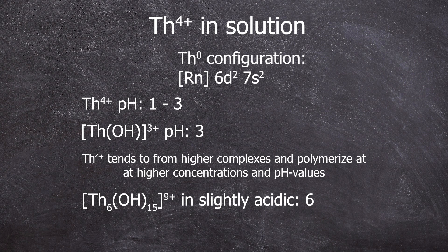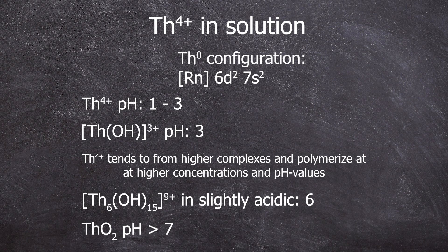It polymerizes into larger complexes until it precipitates as a hydroxide or more precisely as an oxide due to its high oxygen affinity above a pH of 7.